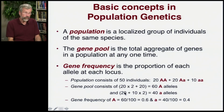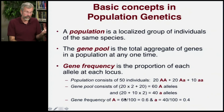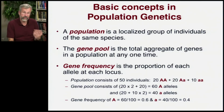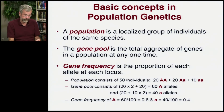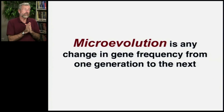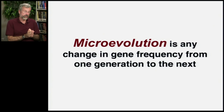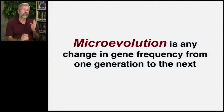So the gene frequency of capital A is 60 out of 100, or 0.6, or 60%. And the rest are little a — 40%. So microevolution, by a very precise definition, is simply any change in gene frequency from one generation to the next.